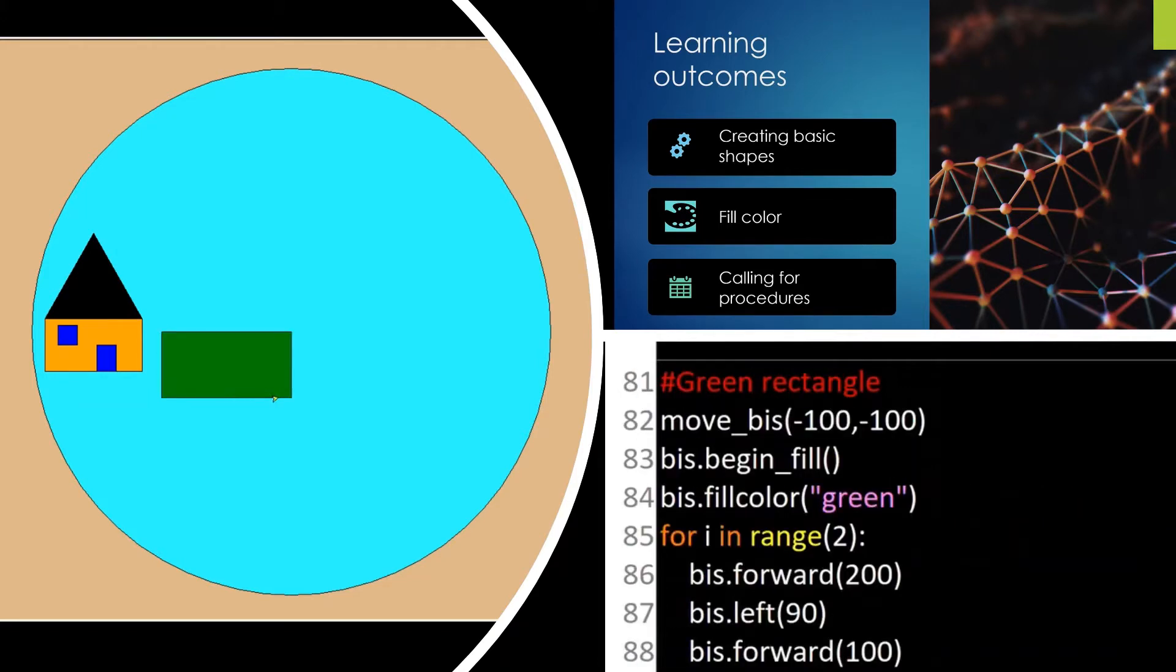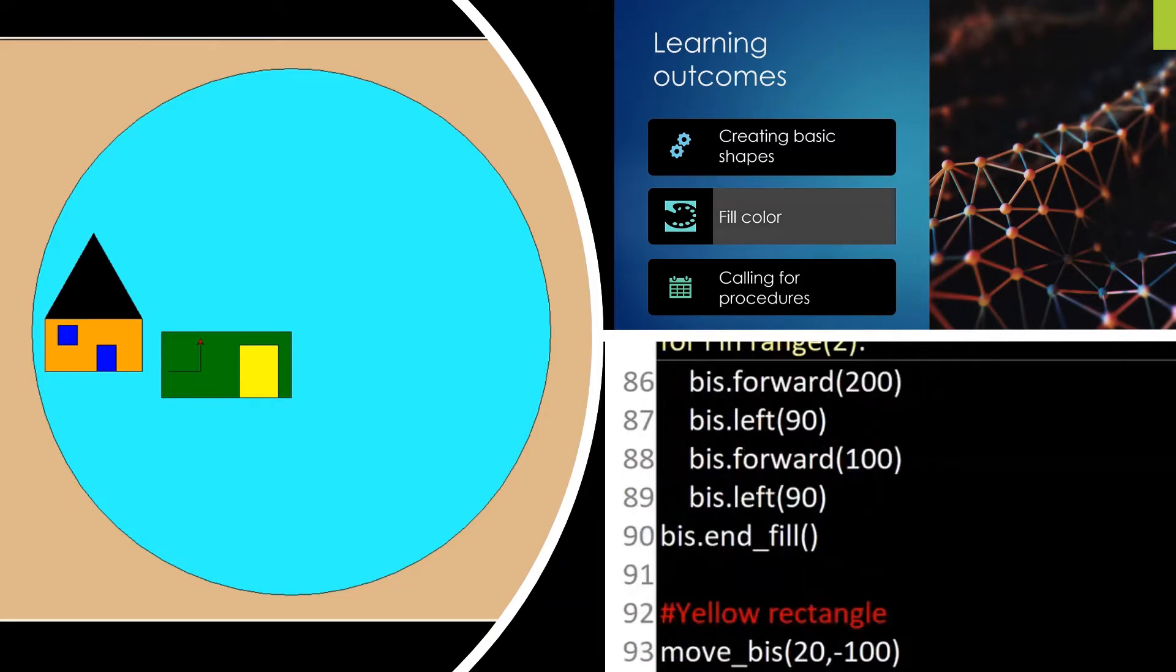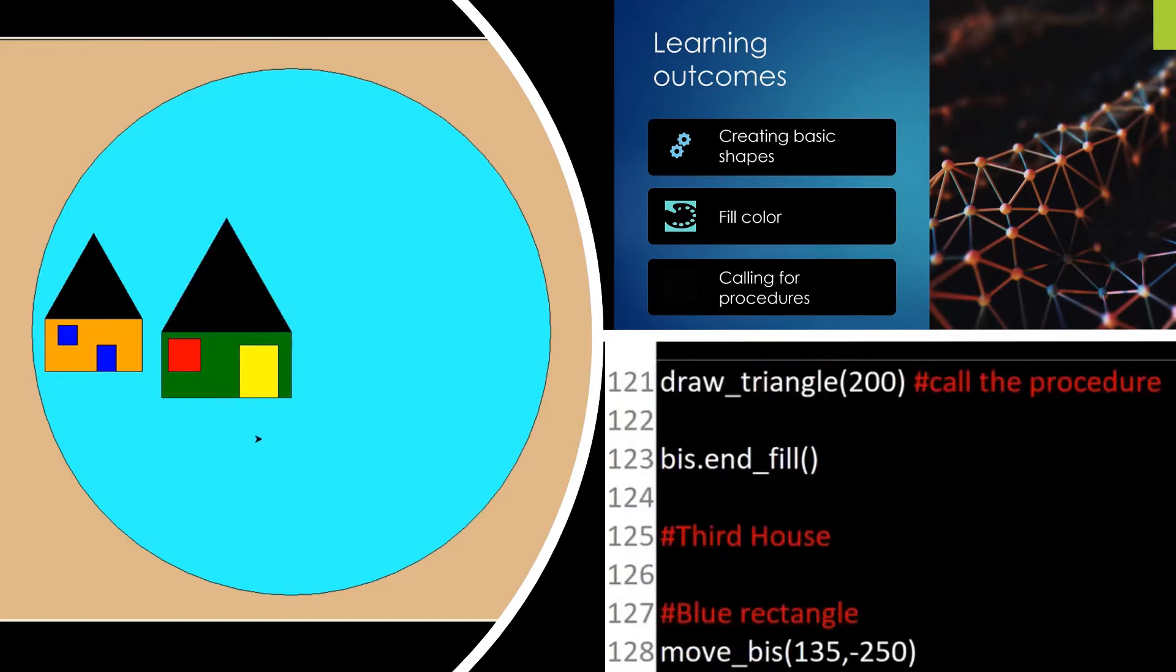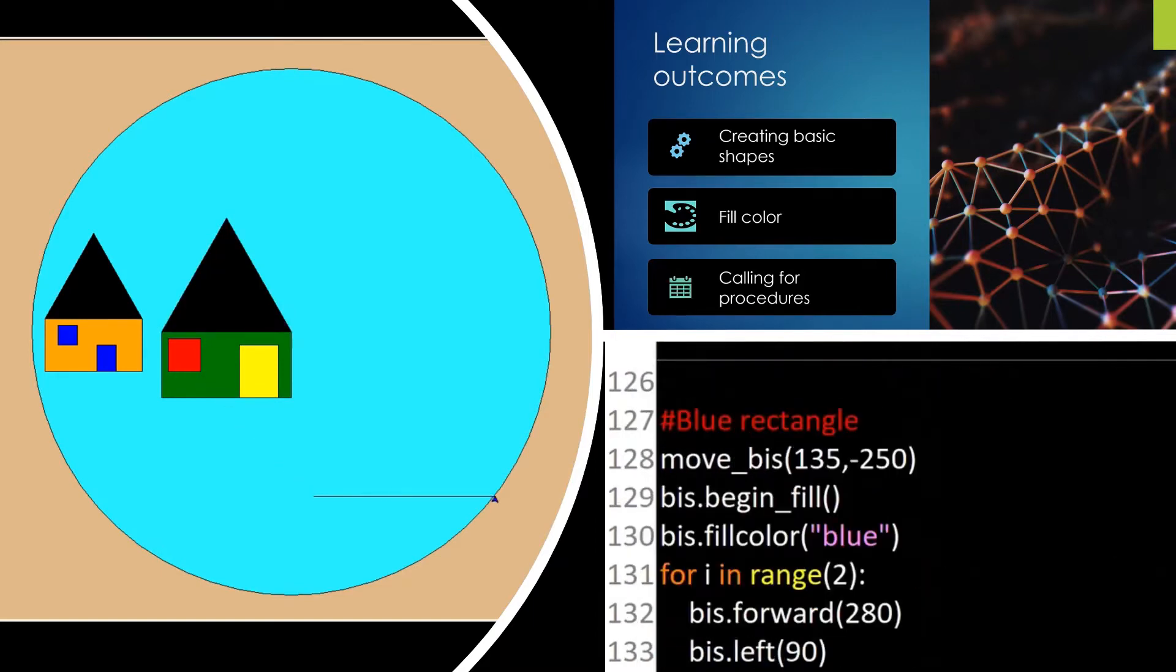Starting with the green rectangle, yellow rectangle, and the red square as the window with the loop. And so finally the black triangle. This is the way we draw the third house as well using the colors.